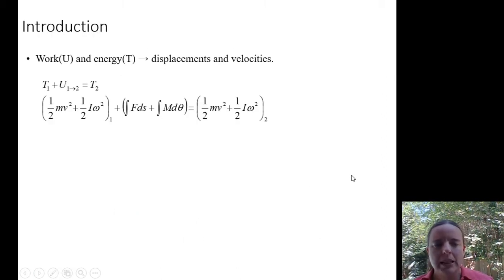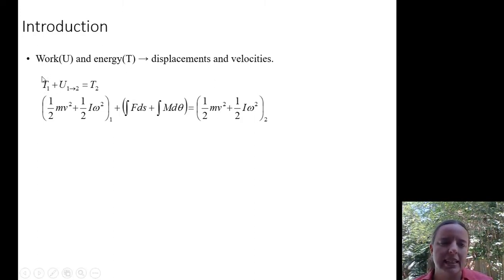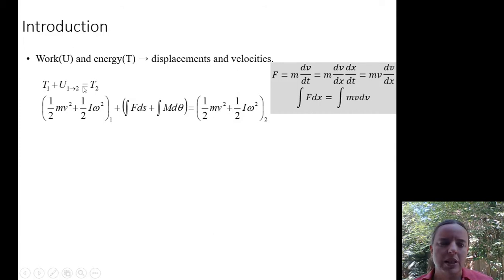Work and energy, looking at displacements and velocities. T denotes kinetic energy. U is going to be a combination of both potential energy and work, any kind of force through a distance. This energy equation comes from F equals ma.